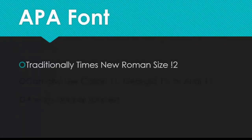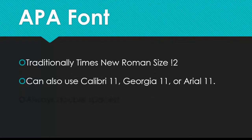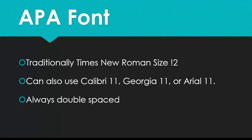The traditional font for APA style is Times New Roman, size 12, double-spaced. With APA 7, you now have a few more options, including Calibri size 11, Georgia size 11, and Arial size 11. Whatever you choose, your paper will always be double-spaced.